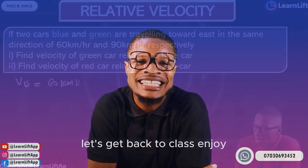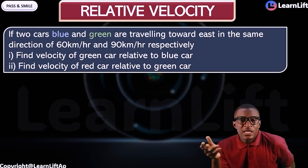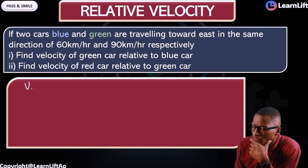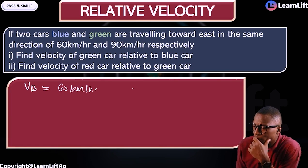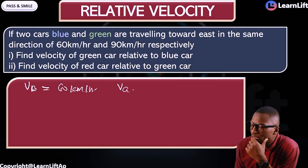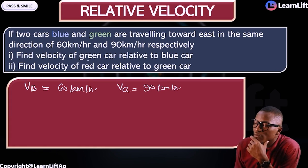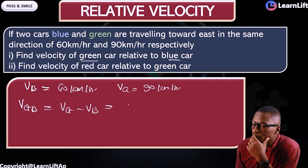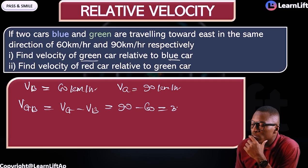Let's get back to class. To solve this, let's identify our parameters. The velocity of the blue car is 60 km/h. The velocity of the green car is 90 km/h. The question asks: find the velocity of green relative to blue. That is V(green to blue) = velocity of green minus velocity of blue = 90 minus 60 = 30 km/h.